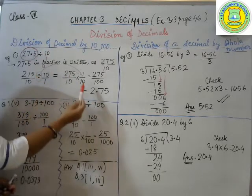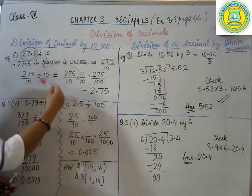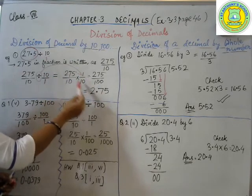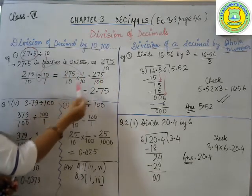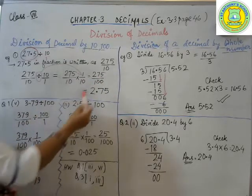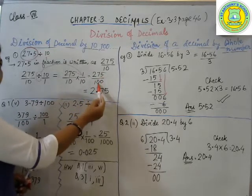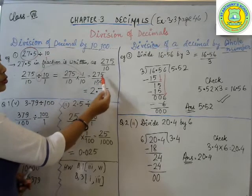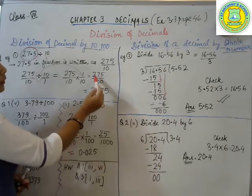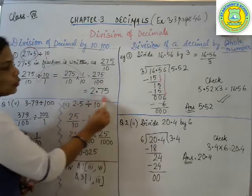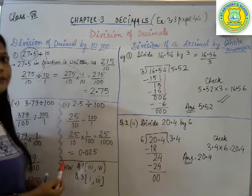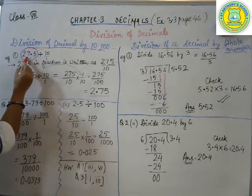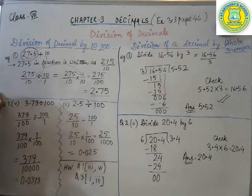So 275 by 10, the division will be changed to multiplication, and the next fraction will be reciprocated or inverted. So 10 by 1 will become 1 by 10. Now 275 into 1 is 275, 10 into 10 is 100. So now our new answer is 275 by 100. In decimals it will be how many digits? One, one, two. So from the back, one, two, the decimal will come here. So the answer will be 2.75. If you see what happened actually, the decimal shifted one position to the left hand side.